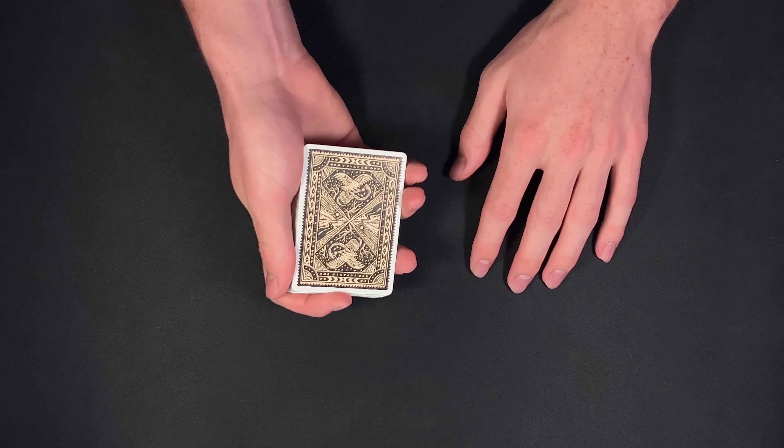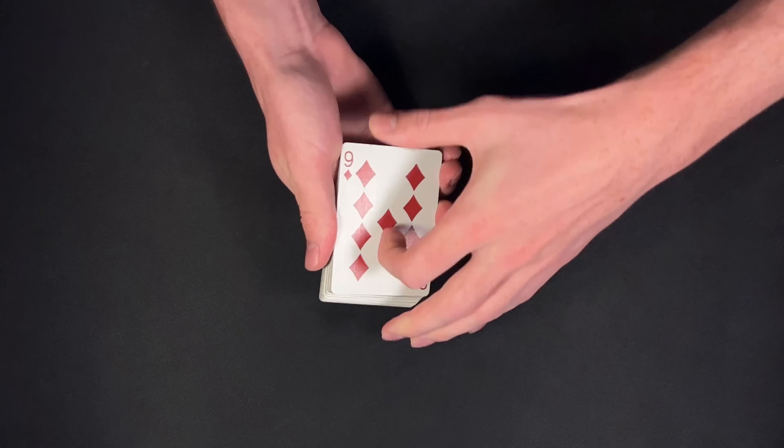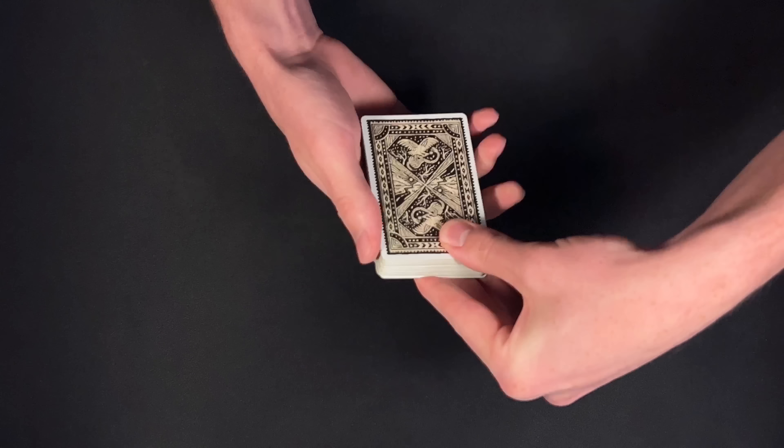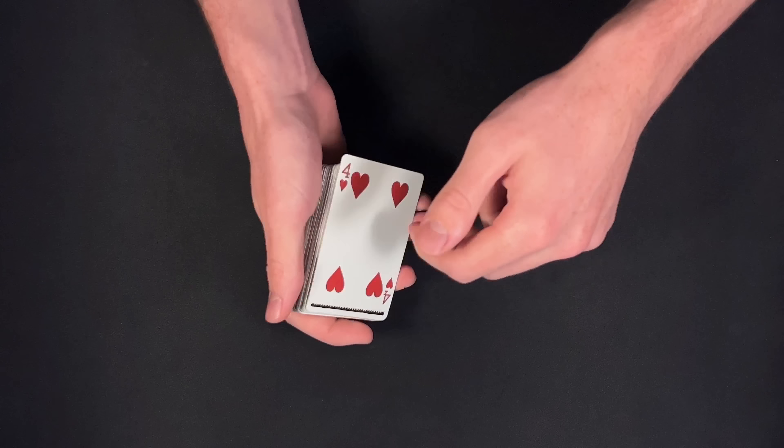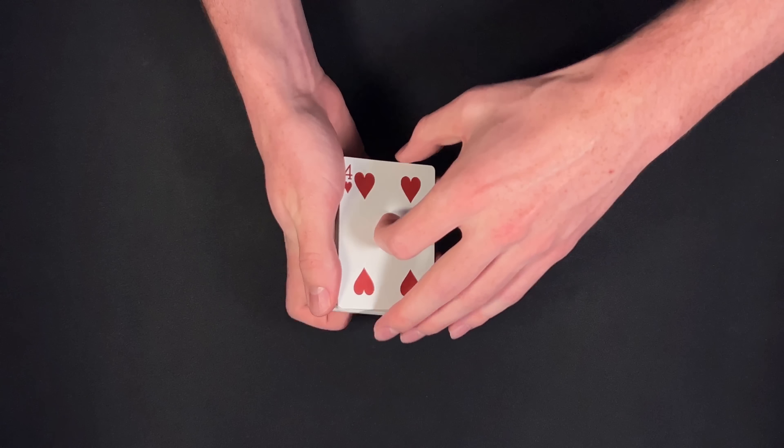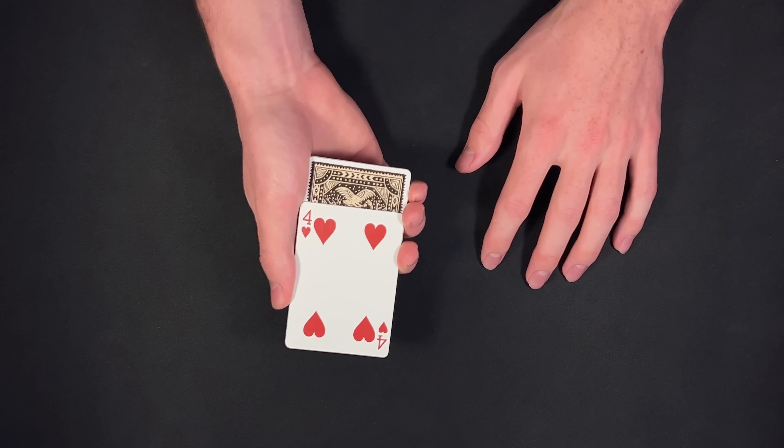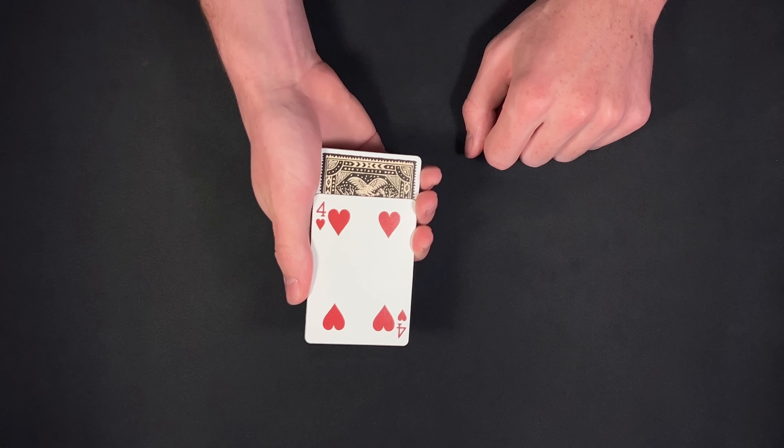Now to confirm the card is lost, I would show my spectator the bottom card. I would ask them if this is their selection. I believe they would say no. I'm also going to show them the card on the very top of the deck. In this case, the four of hearts. I believe they would say this is also not their card. So my spectator selection is truly lost in the middle of the deck.